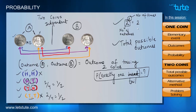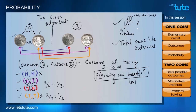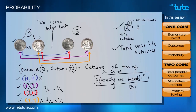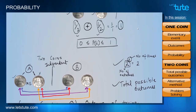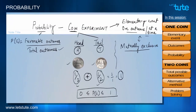In the same way, we can work out probabilities associated with three coins and explore all possible combinations. Now let's go ahead and make a checklist of what we learned in this session.